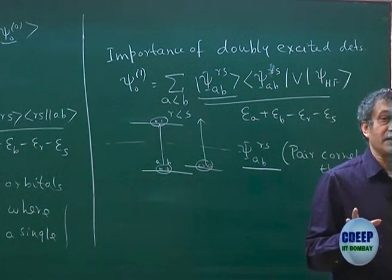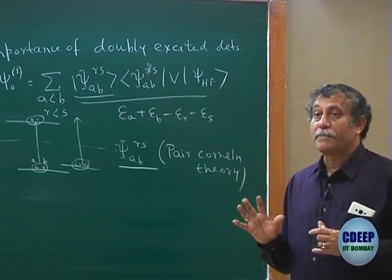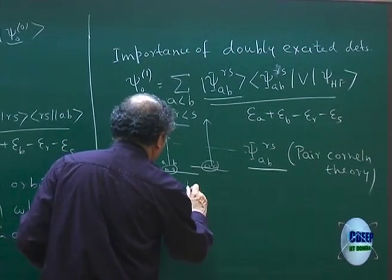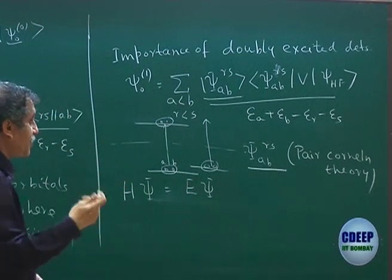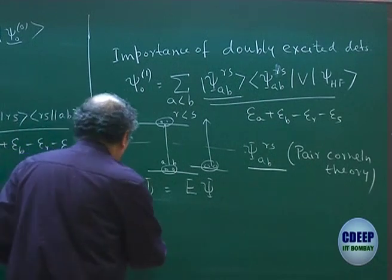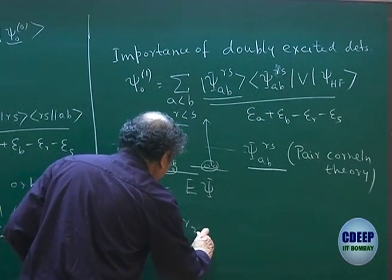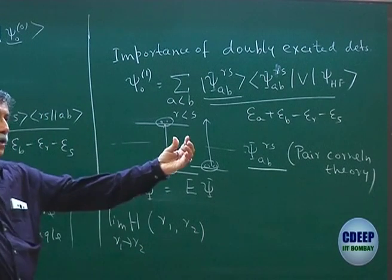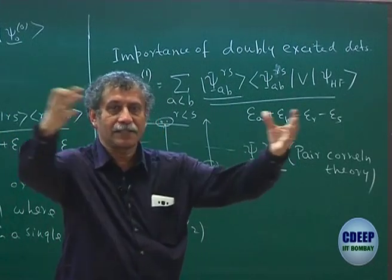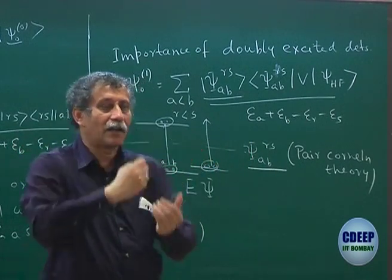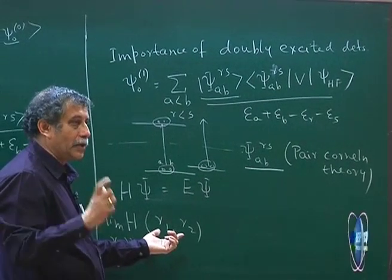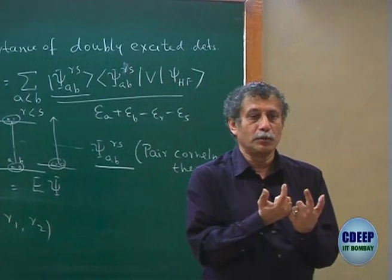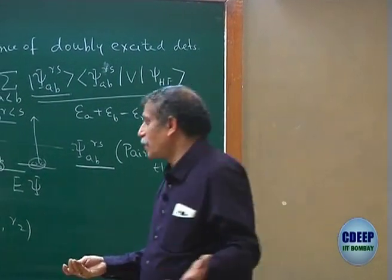Why is excitation related to correlation? Physically, we have a Hamiltonian and we are trying to solve the Schrödinger equation. For two particles R1 and R2, in the limit of R1 tending to R2, the Hamiltonian has a 1/R12 term. As R1 tends to R2, this 1/R12 becomes infinity — this is called a singularity. For a singular Hamiltonian, if psi is a finite function, the energy will become infinite.